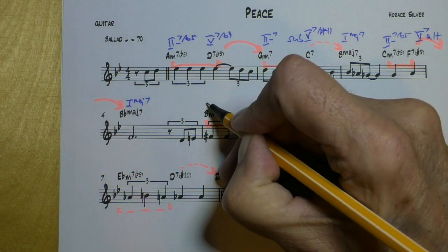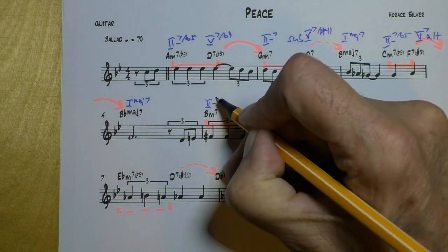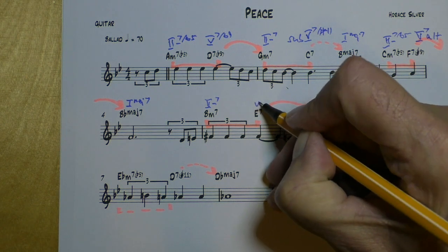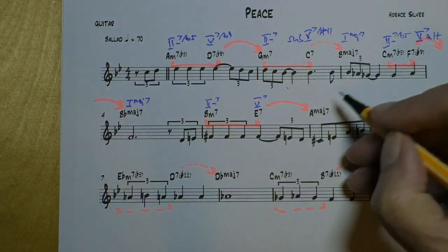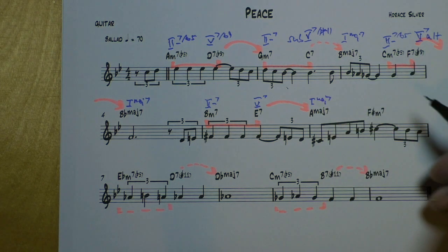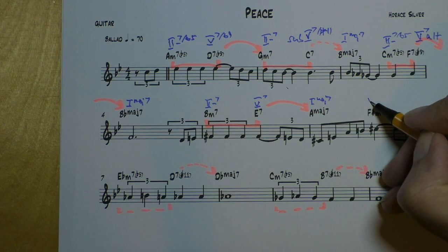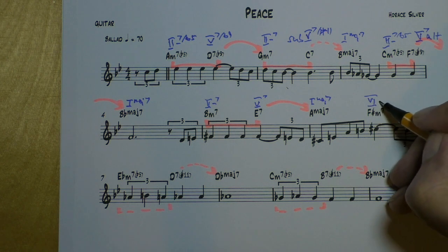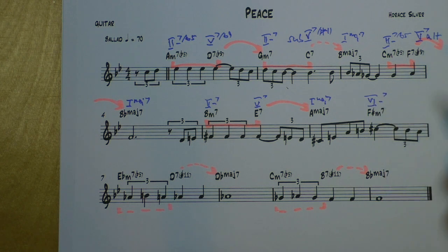That's a 2-7b5 again, going to a 5-7. And that is an altered chord because of the sharp 9, going to major. That's a 1 major 7 chord. Here we go. 2-7, 5-7, 1 major 7. And that's a 6-7. So far we only had 2-5 once and now we have a 6-7.